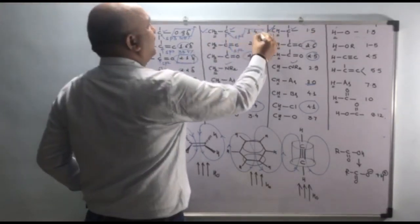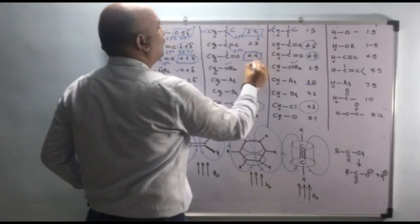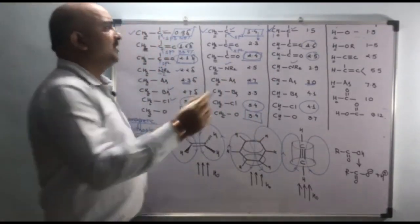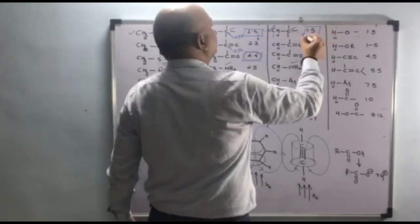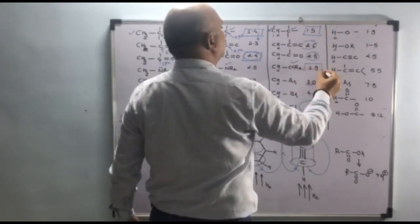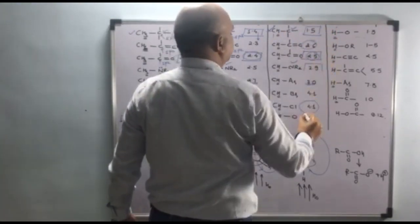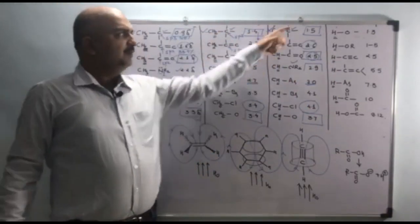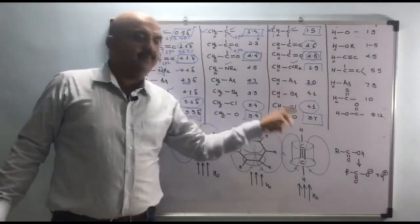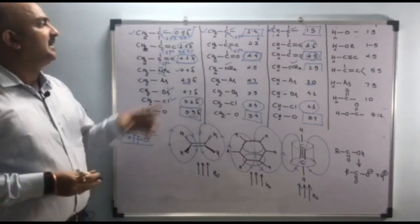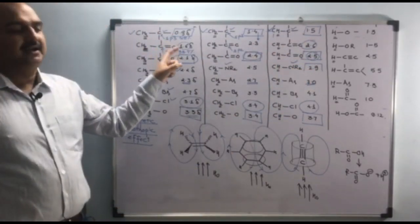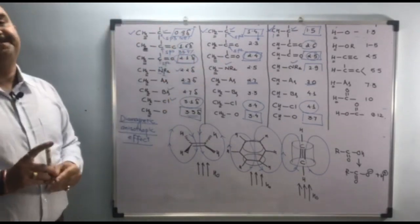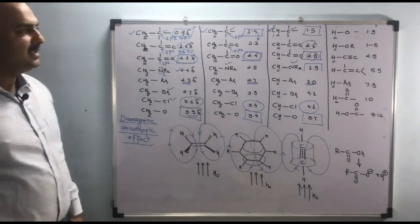For methylene: 1.4, 2.4, and 3.4. For methane: 1.5, 2.5, and 3.5 — following the same pattern. So normal methyl appears at 0.9 delta. These values all have a structural reason behind them.